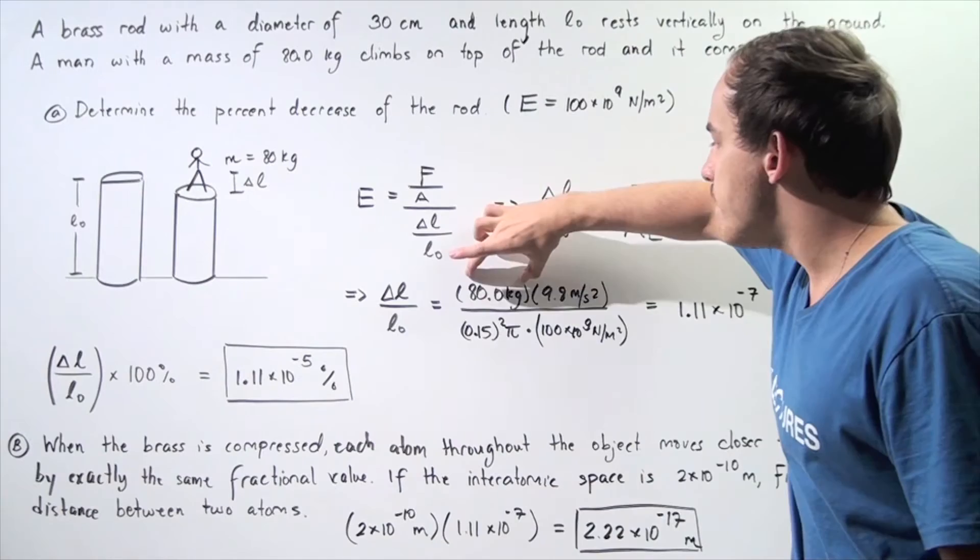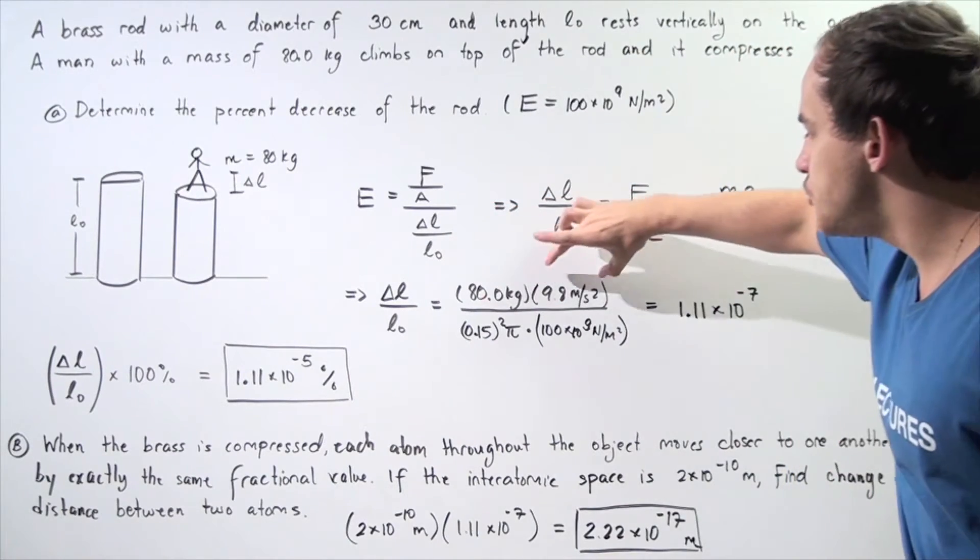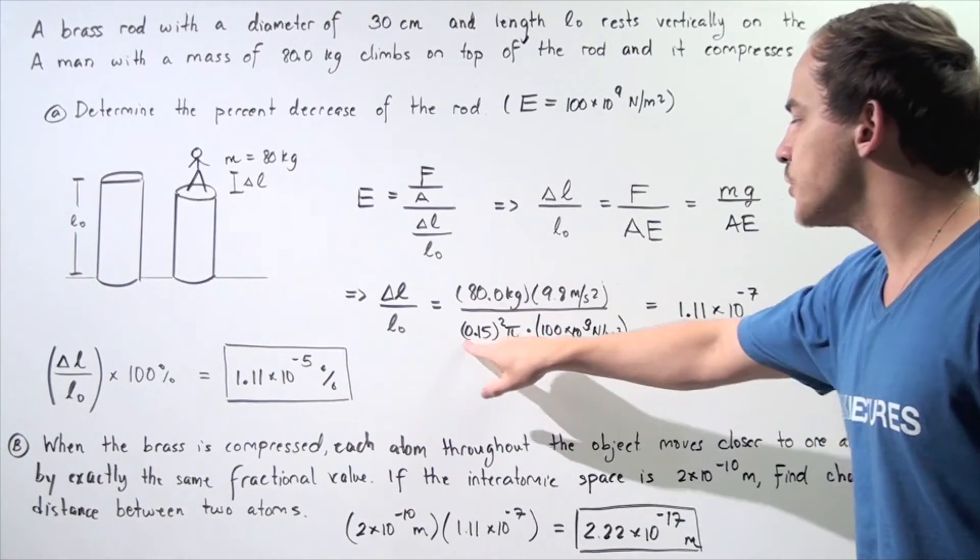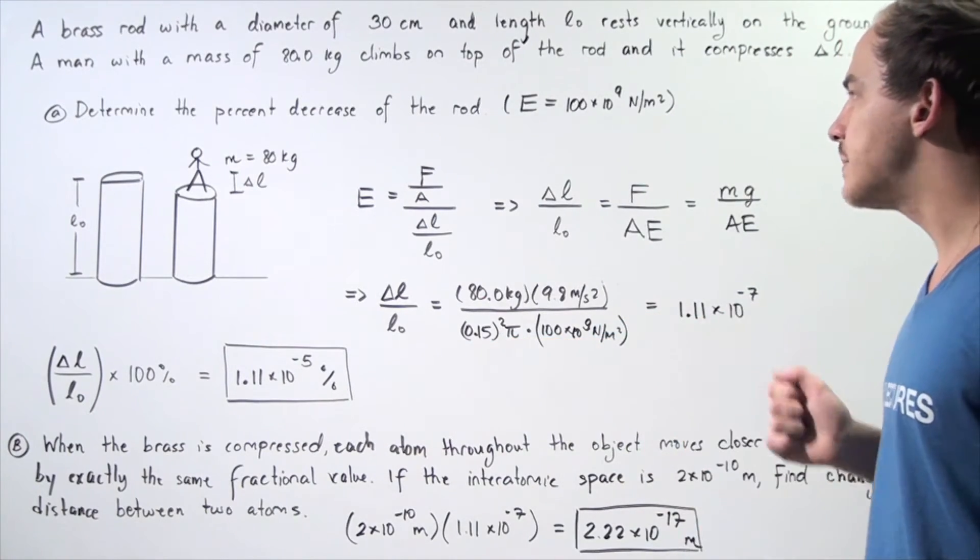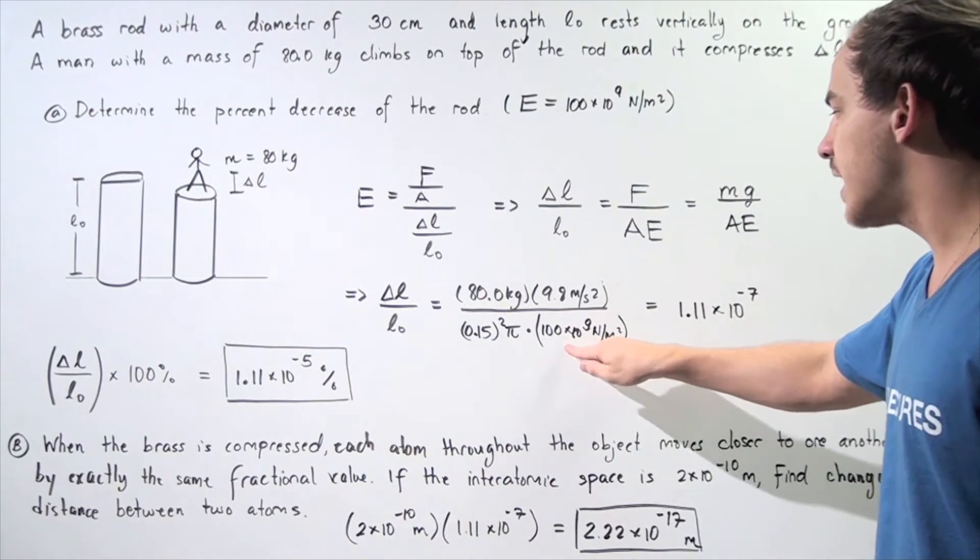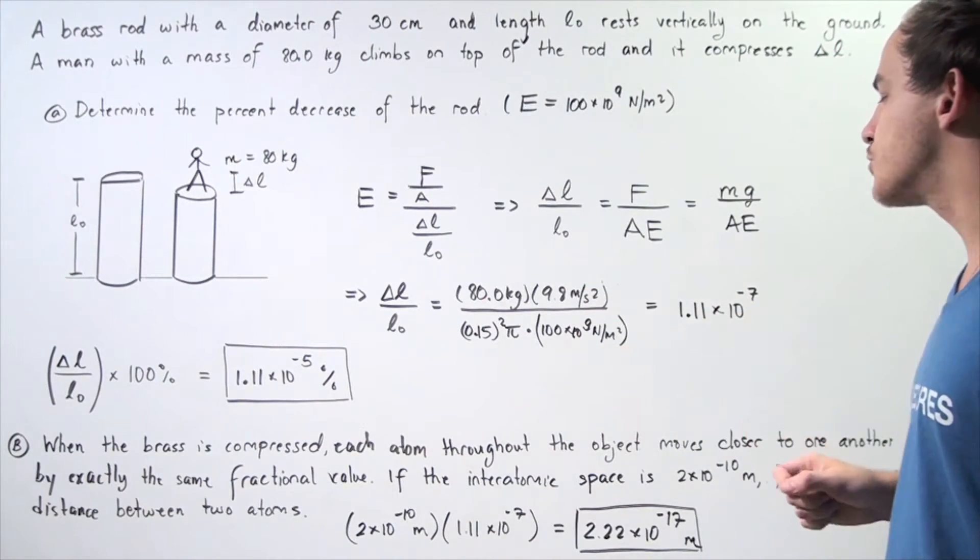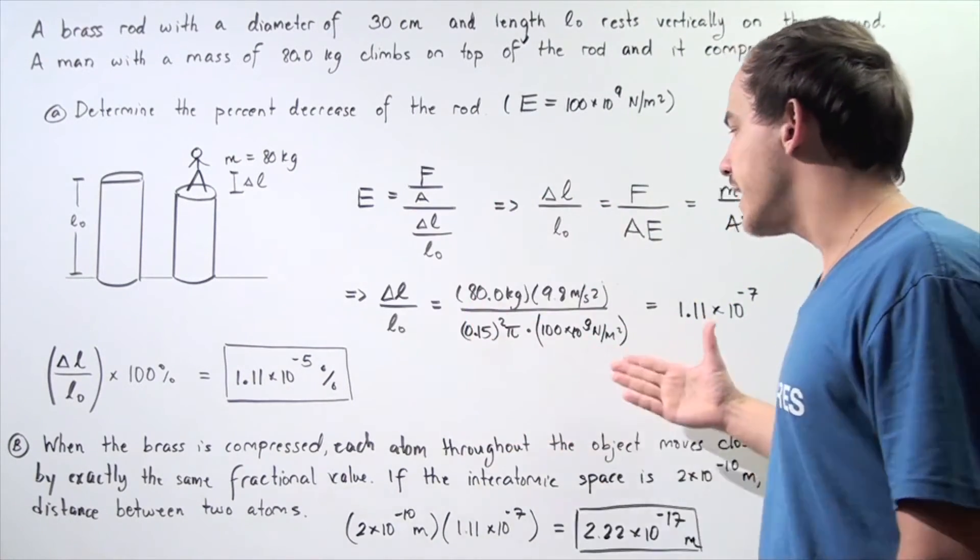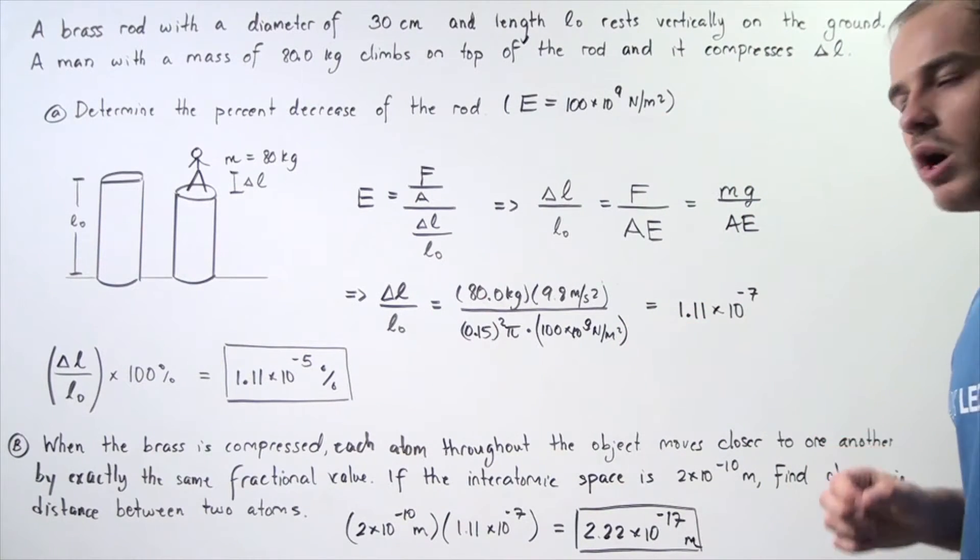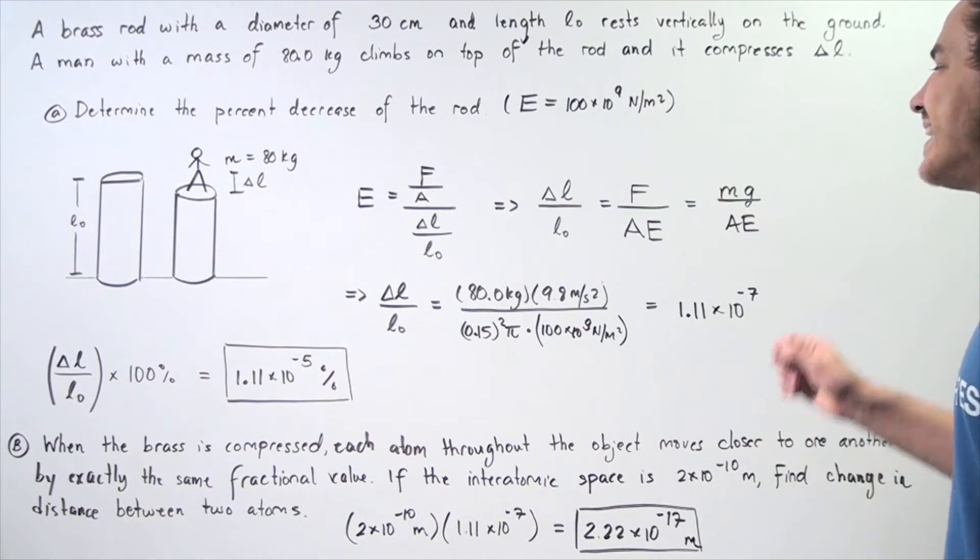And it's equal to, well, the mass is 80 kilograms, the G is 9.8 meters per second squared, the area is 0.15 meters squared times pi, and E, Young's modulus, is 100 times 10 to the 9 newtons per meter squared. So, we multiply, and we divide, and we get approximately 1.11 times 10 to the negative 7.